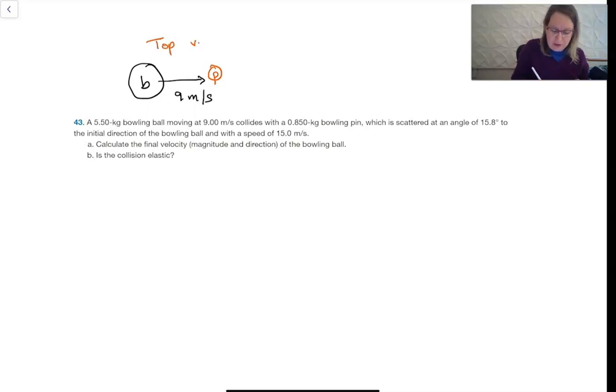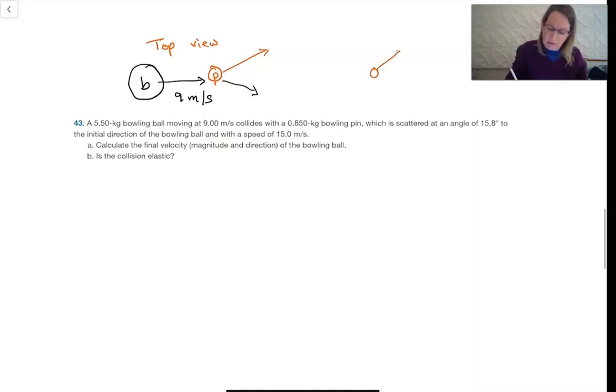So what happens is afterwards the pin is going to go off at some angle, which means the bowling ball is going to get deflected just a little bit. This is the initial setup, and the final setup would be I've got the pin going off here at an angle theta. The bowling ball is going to be, probably because it's so much bigger, going at a fairly high speed at a much smaller angle.